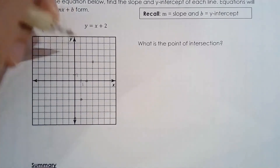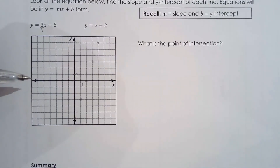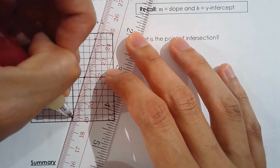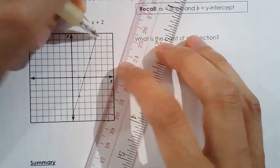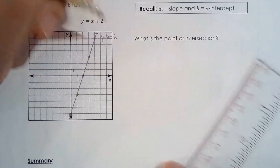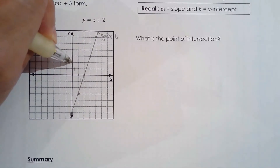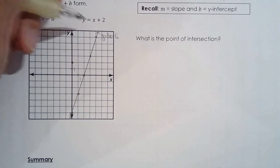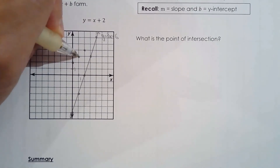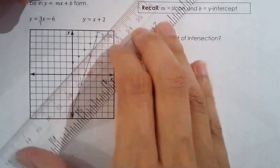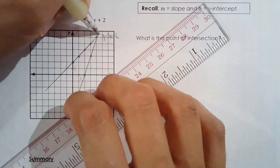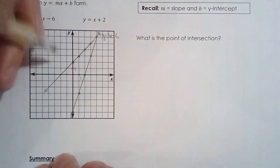Connecting the dots gives a nice accurate line. The next line, y equals x plus 2, has a y intercept of 2 and a slope of 1 — meaning 1 up, 1 to the right. I'll label this line y equals x plus 2.